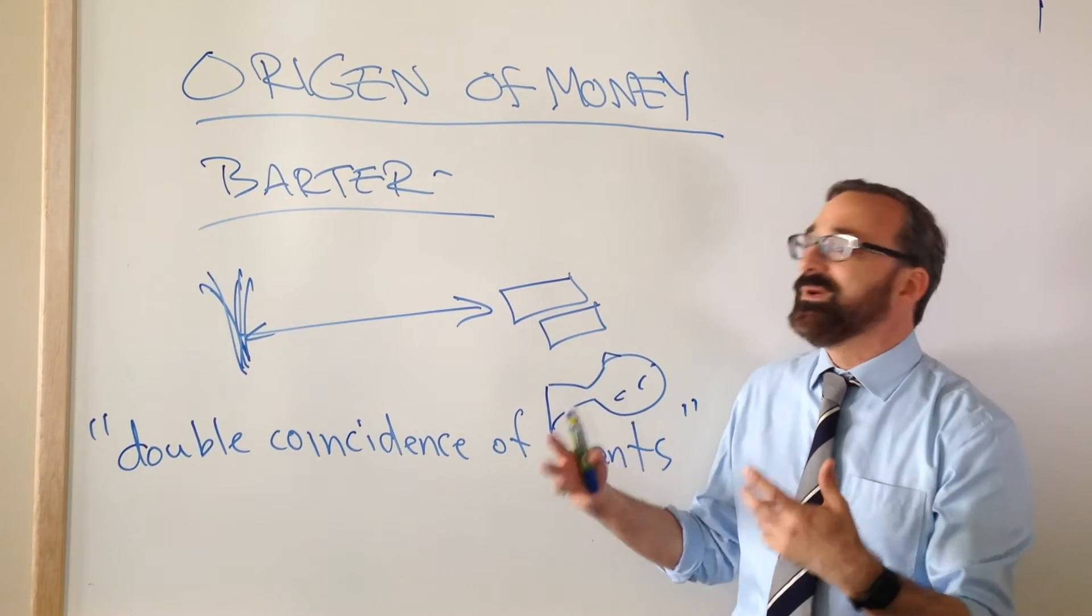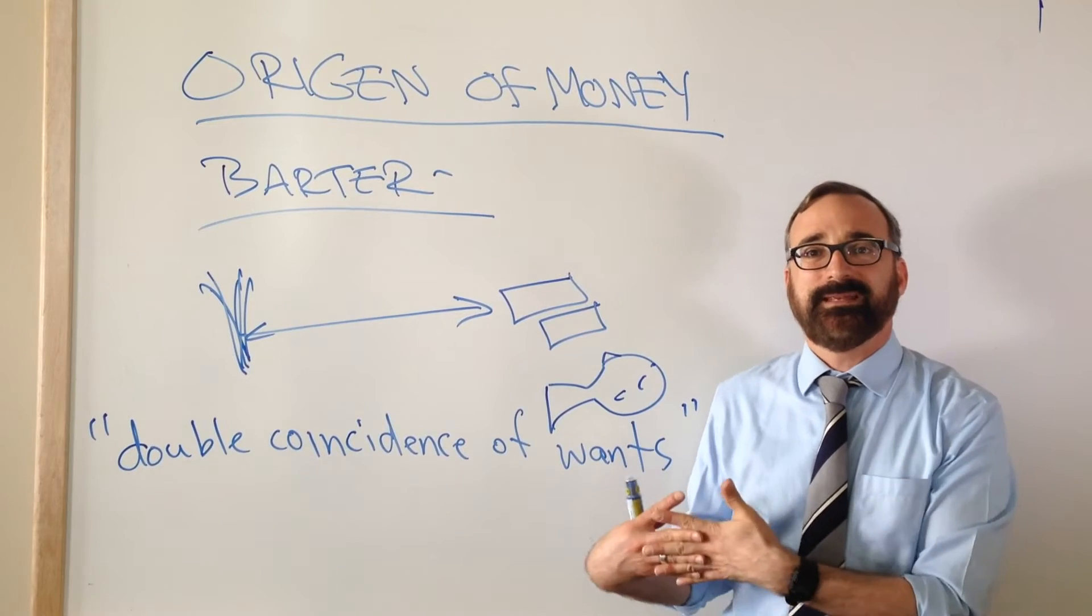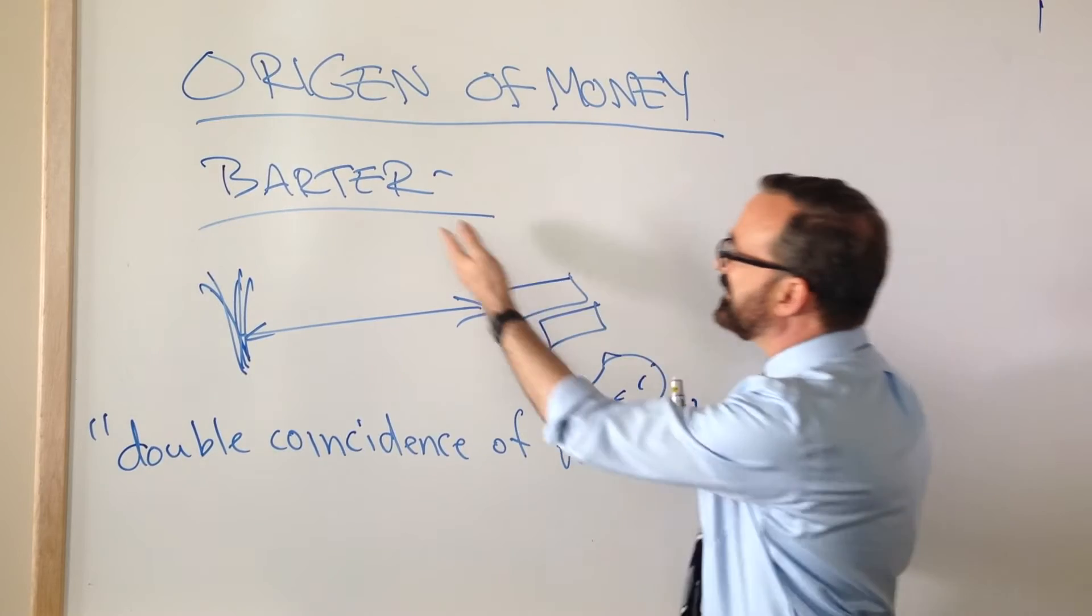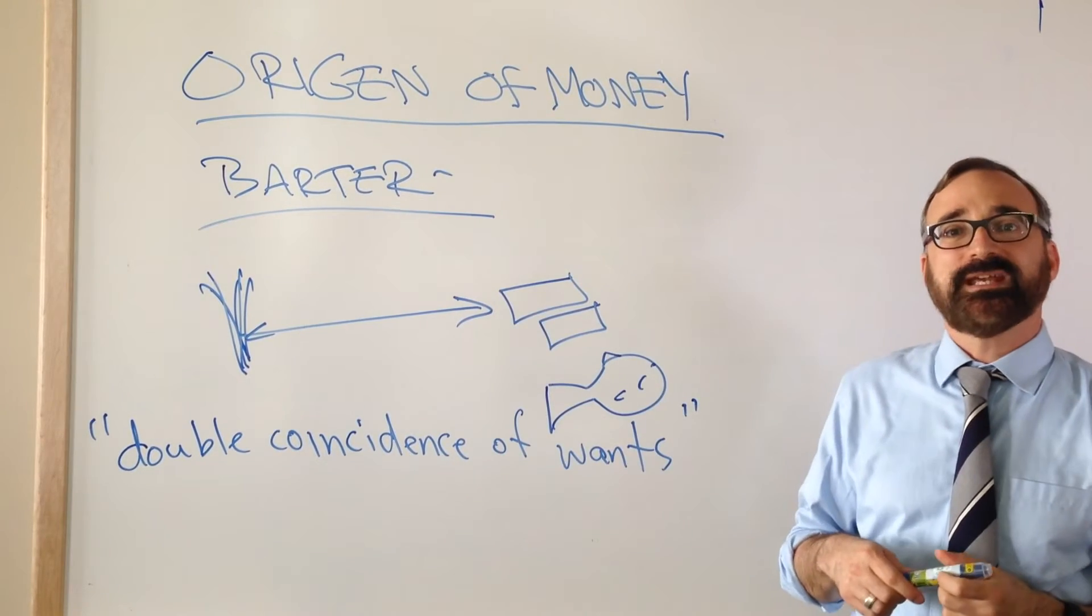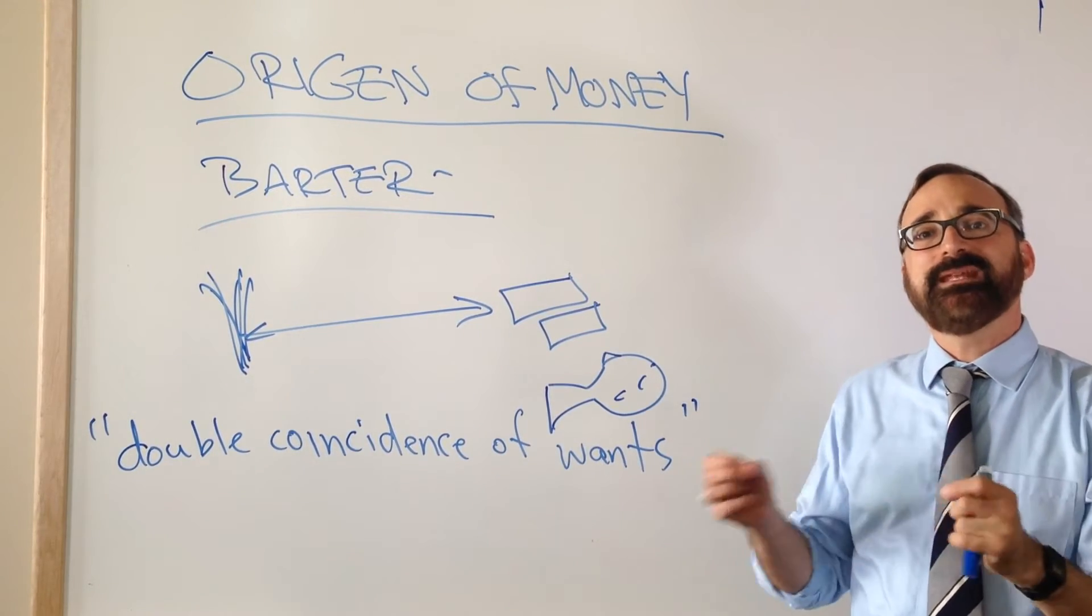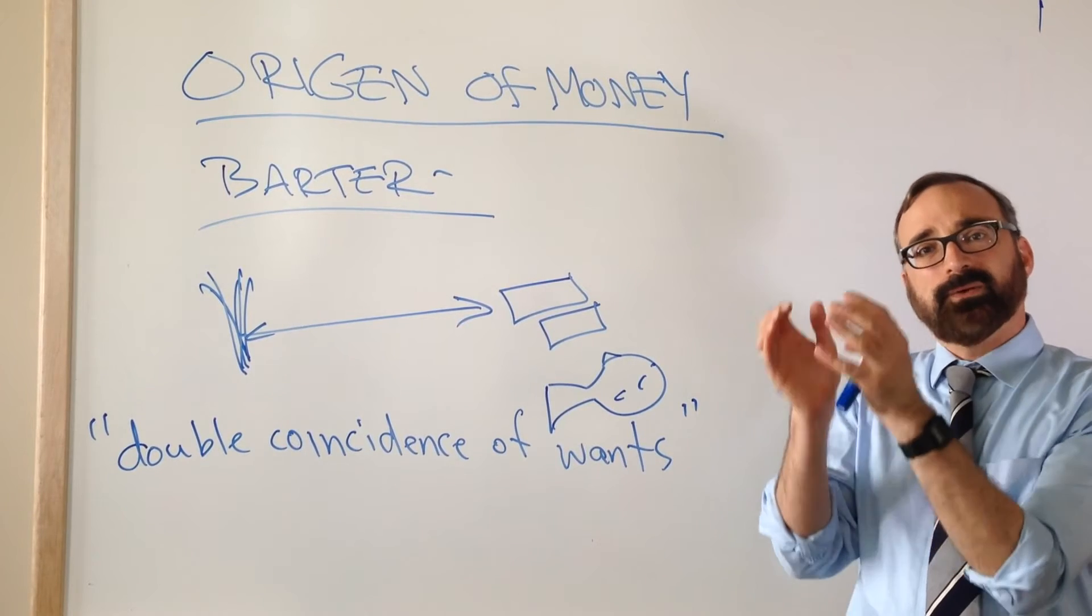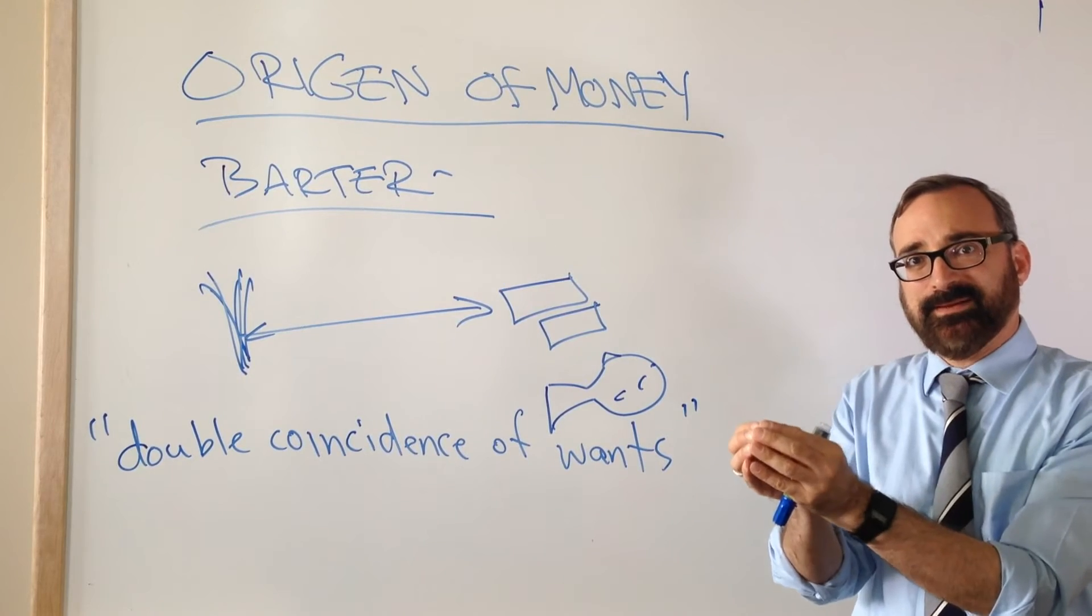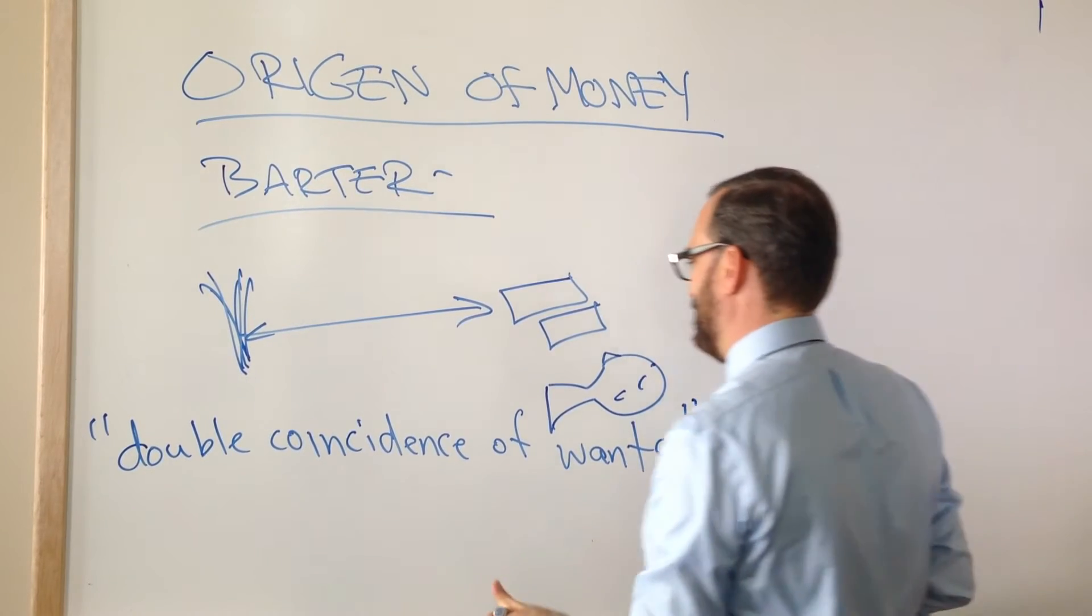So what do we do? Well according to the economic story, what we do is we invent something that basically sits in between all of our exchanges that can help us intermediate them—one token or one thing that can be used as exchangeable for all other things. What we do is we invent money.